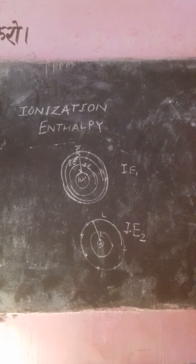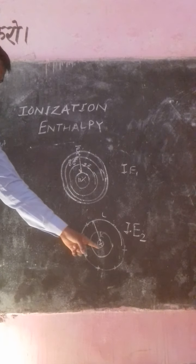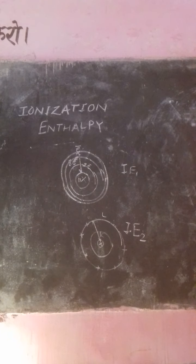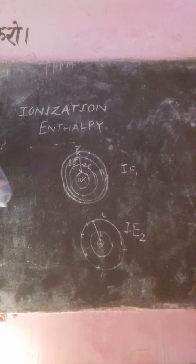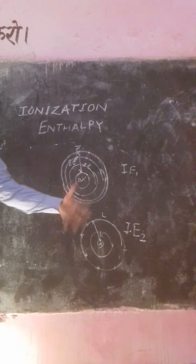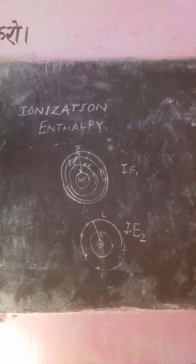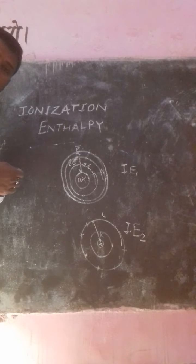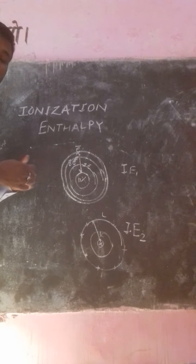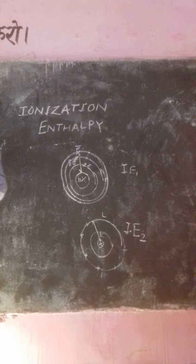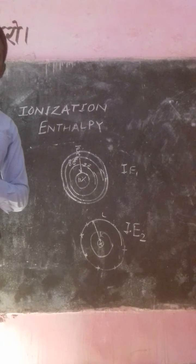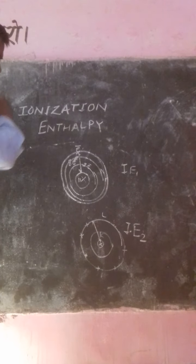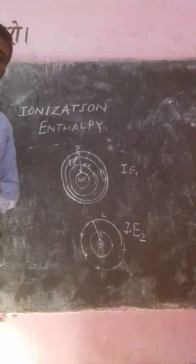Similarly, if you talk about IE3: the proton number is 11, meaning the nuclear charge is 11 plus. But if you talk about the number of electrons, it is only 9 after removing two electrons, meaning the negative charge is 9 while the nuclear charge is 11 plus. So the nuclear charge will dominate more as compared to the number of electrons. In the case of IE3, the electron will be more strongly held, and that is why ionization energy 3 will be more as compared to IE2. So the trend is: IE3 is greater than IE2 is greater than IE1.